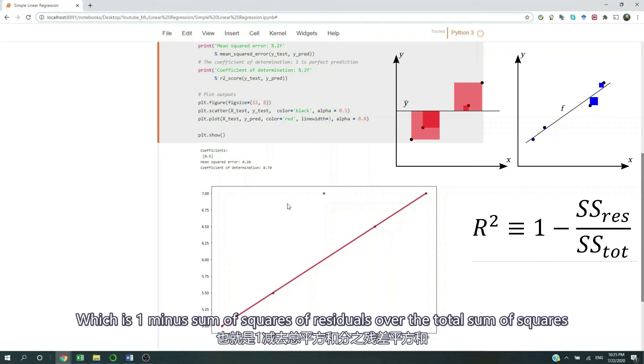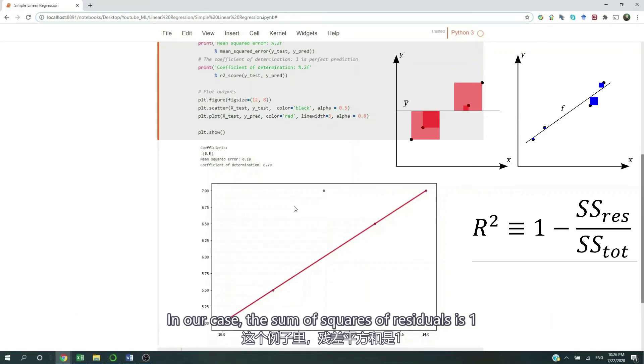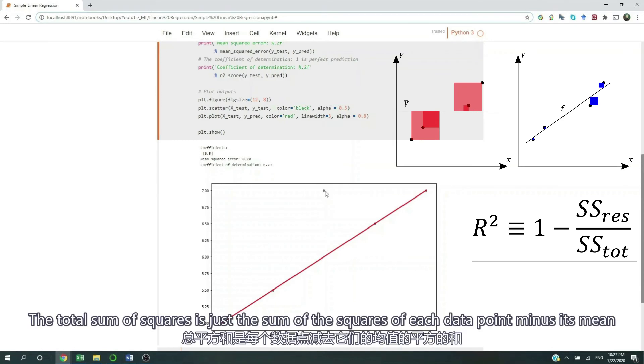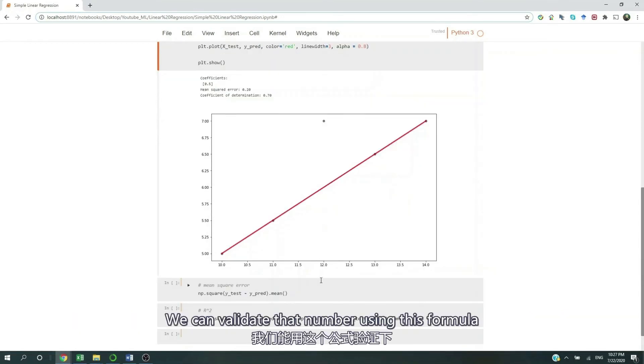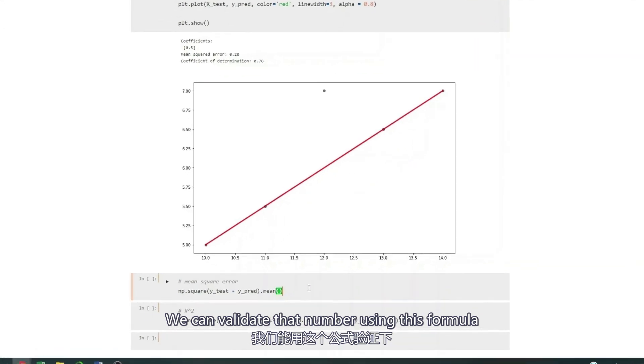which is 1 minus sum of squares of residuals over the total sum of squares. So in our case, the sum of squares of residuals is 1. And the total sum of squares is just the sum of the squares for each data point minus its mean. Now we can validate that number using this formula.